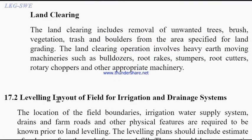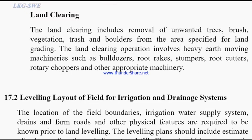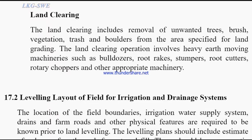Let's continue with the last set: Land Clearing. The land clearing includes removal of unwanted trees, bushes, vegetation, trash, and boulders from the area specific for land grading. The land clearing operation involves heavy earth-moving machinery such as bulldozers, root rakes, stumpers, root clusters, rotary choppers, and other appropriate machinery.